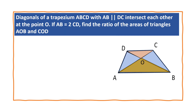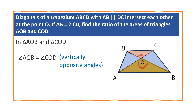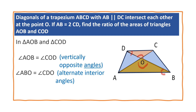In order to find the ratio of the areas of triangle AOB and COD, we have to prove that they are similar. In triangle AOB and COD: angle AOB is equal to angle COD because they are vertically opposite angles. And angle ABO is equal to angle CDO because they are alternate interior angles, since AB is parallel to CD. So, triangle AOB is similar to triangle COD by the angle-angle (AA) criteria.